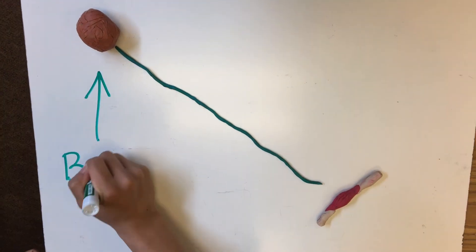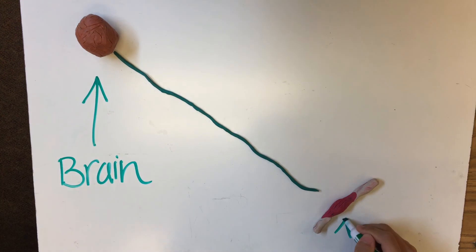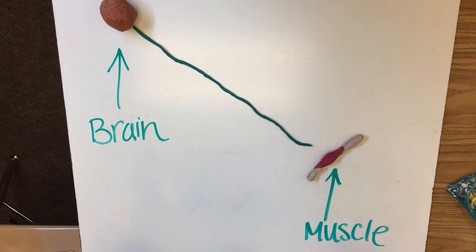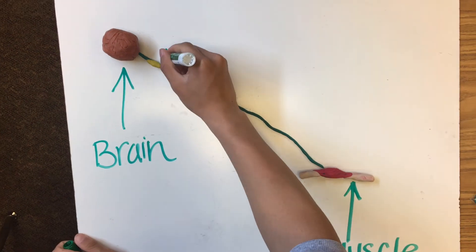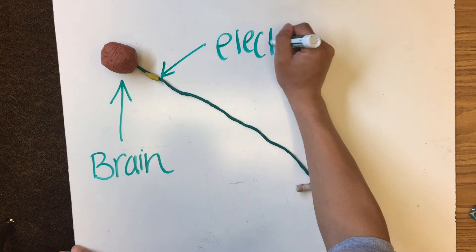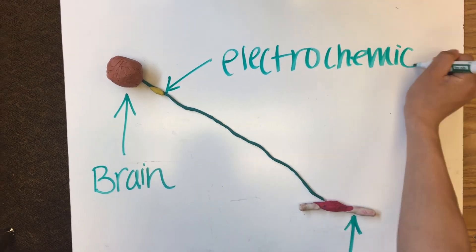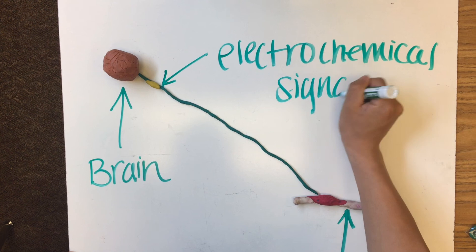Here is the brain and over here we have the muscle. So what happens is that the brain sends an electrochemical signal to the muscle so that it tells it to contract.